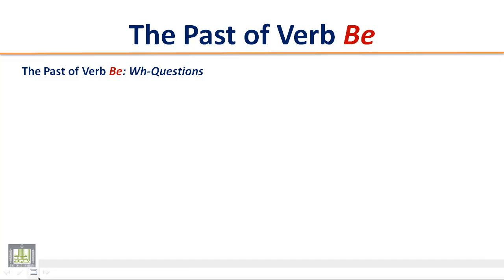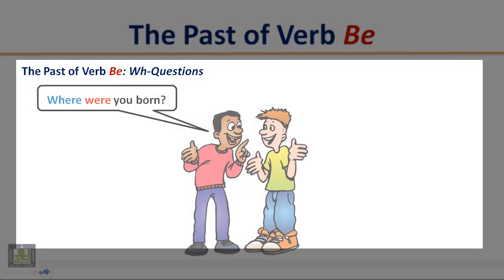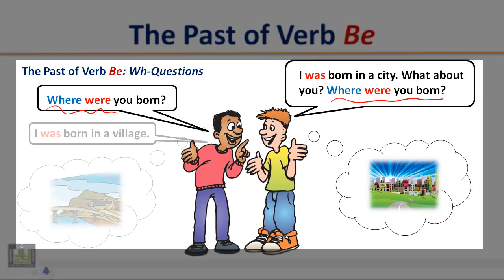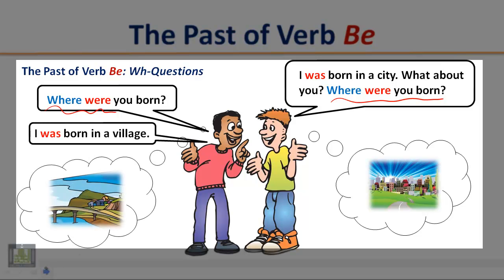The past of verb B — WH questions. Listen to the following short conversations and pay attention to the word order in WH questions. 'Where were you born?' 'I was born in a city. What about you? Where were you born?' 'I was born in a village.'